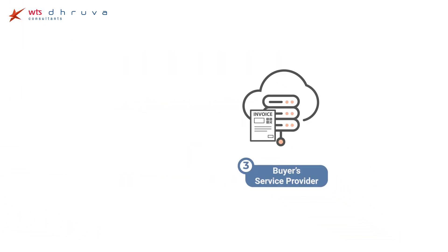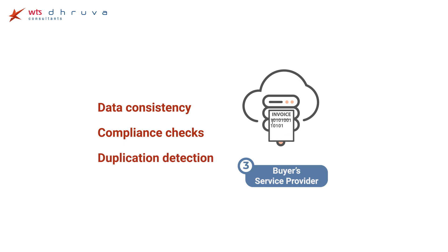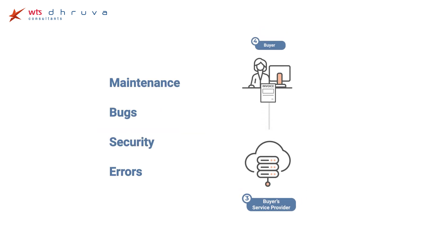When the customer's service provider receives the invoice, additional checks are performed, including data consistency, compliance checks, and duplication detection. The invoice is then converted into a business-friendly format and sent to the customer's software or ERP system. The considerations for the customer service provider are largely the same as for the supplier service provider.